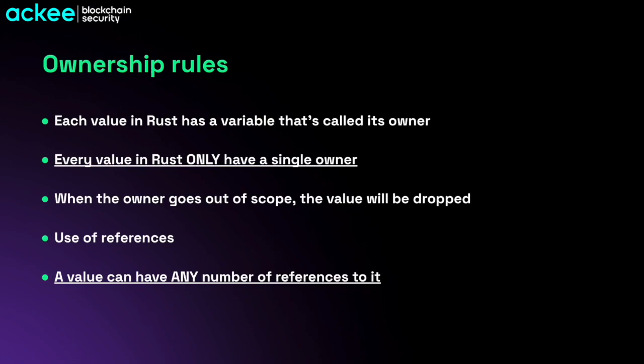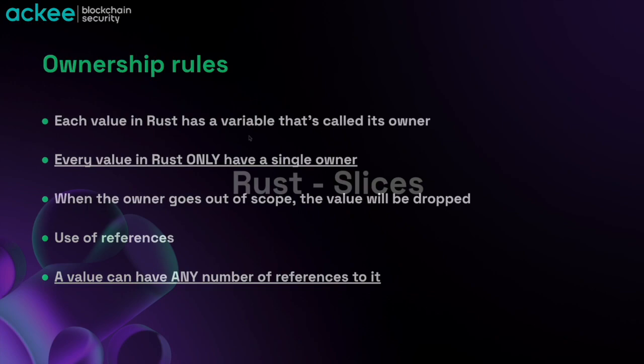Let's summarize ownership rules and memory management in Rust. Each value in Rust has a variable called its owner. Every value has a single owner, and when the owner goes out of scope, the value is dropped and freed from memory. To pass values without transferring ownership, we use references. References can be immutable or mutable, and a value can have any number of references to it. When passing a mutable reference, make sure it references a mutable variable.